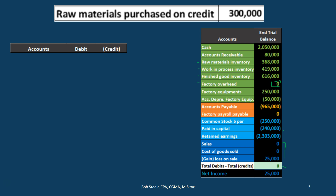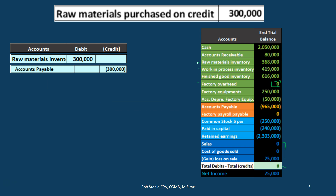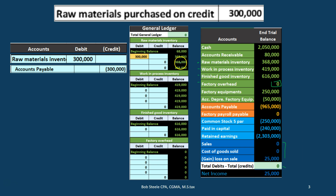First we have raw materials purchased on credit. We would debit the raw materials inventory — inventory is going to go up — and we're going to credit accounts payable. We're going to focus on the general ledger accounts related to inventory, so we won't list the accounts payable account here. Raw materials go up 68,000, up by 300,000 to 368,000, which matches our trial balance at 368. The other side went to accounts payable.